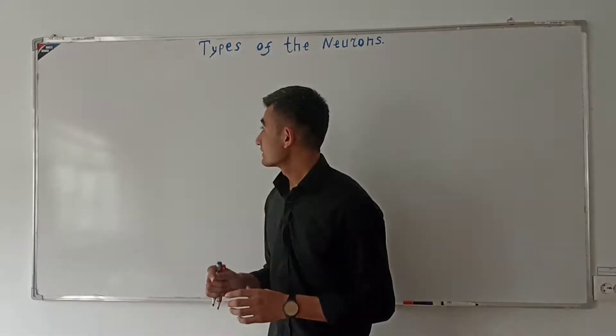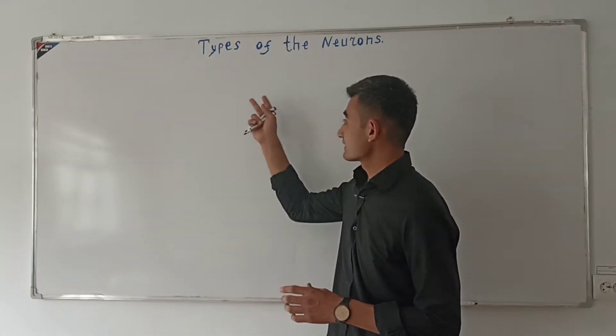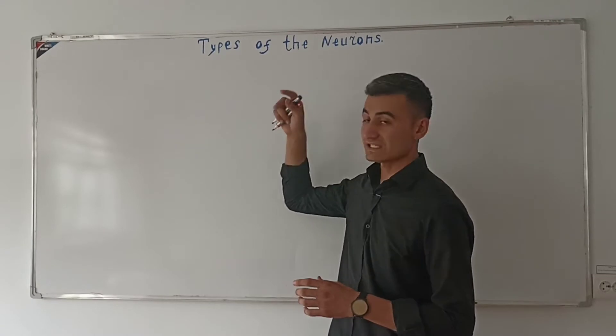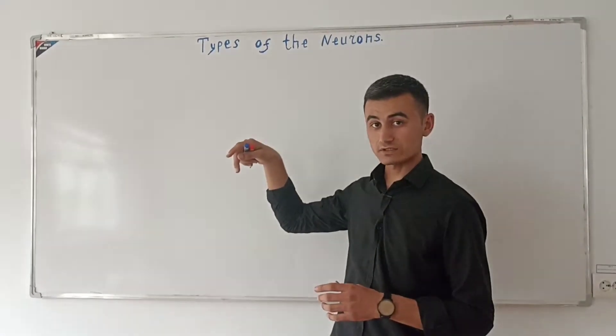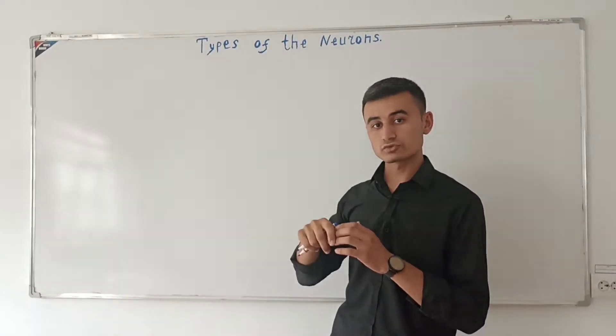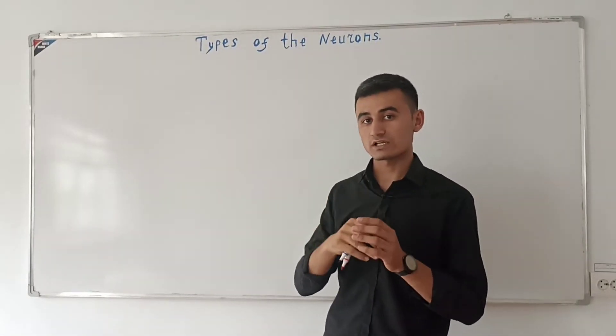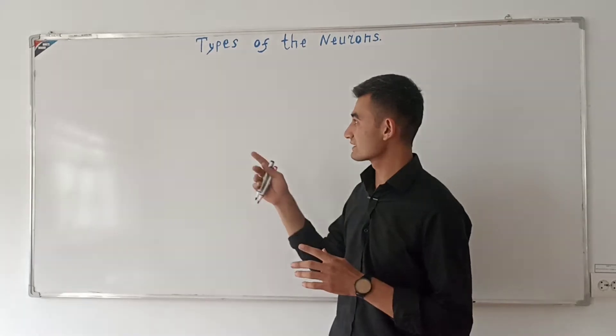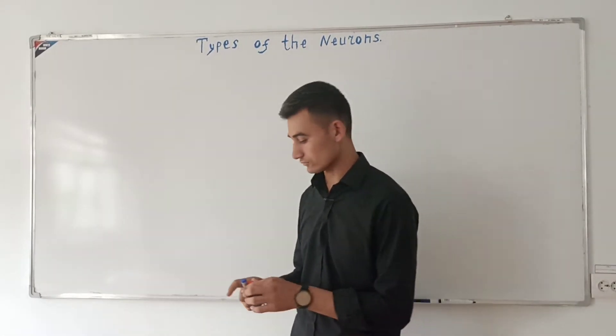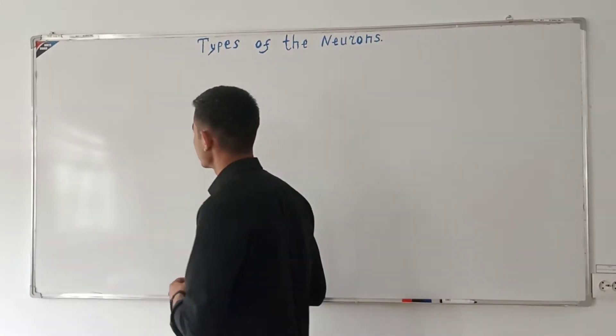Neyronlarni turlarga ajratishimiz uchun neyronning qanday vazifaviy turlari bor va qanday yagona strukturasiga bog'liq turlari bor. Keling, vazifasiga bog'liq turlarini ko'rib chiqamiz.